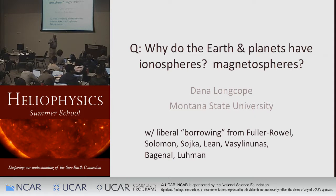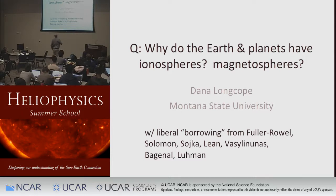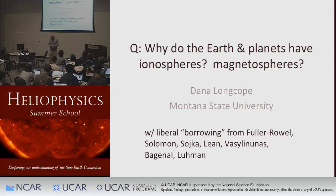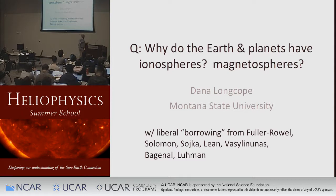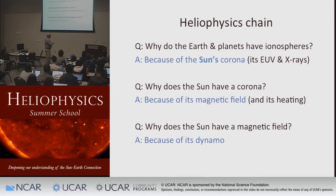I'm going to finish this superficial overview of the heliophysical system, the heliosphere, with the last of the three questions we asked: why does the Earth and other planets — and now in addition to our usual eight or nine planets, we can also ask the same question of exoplanets that we're able to see — why would they have an ionosphere, and why do they have magnetospheres? They have an ionosphere because of the sun — the x-rays and the EUV from the sun's corona.